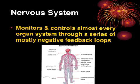Your nervous system is helping to monitor and control, so that's why we call it the control system. It takes care of all of the other organ systems and it all comes back to those negative feedback loops, maintaining homeostasis. So let's talk about the structure of the nervous system.